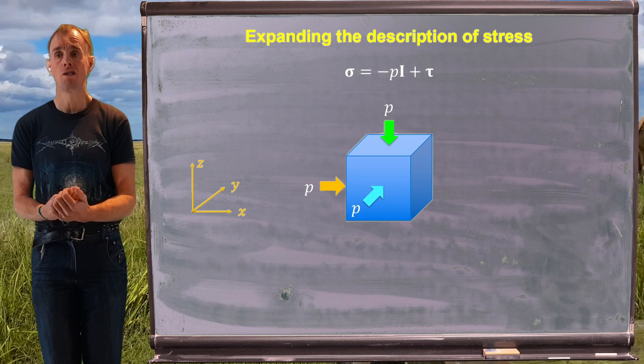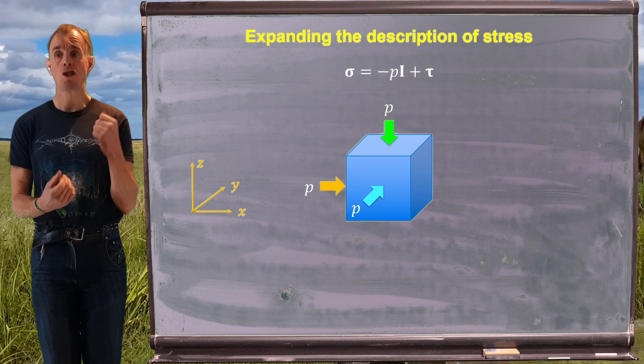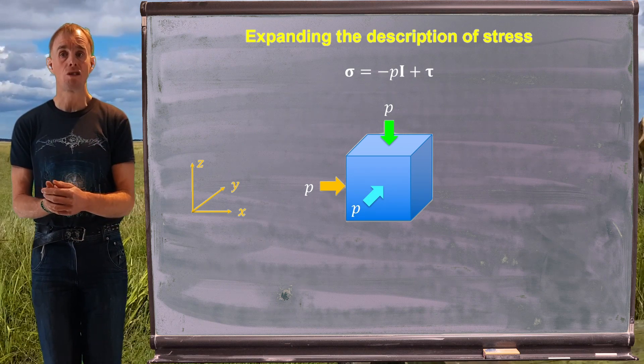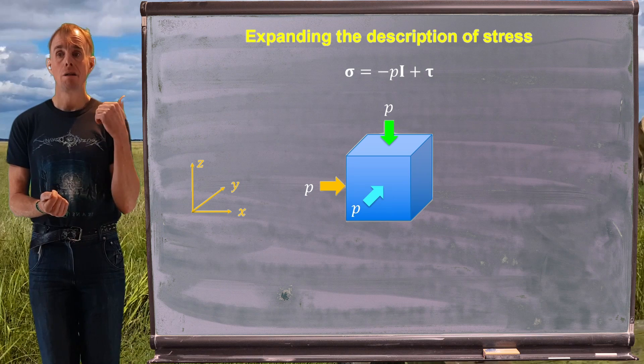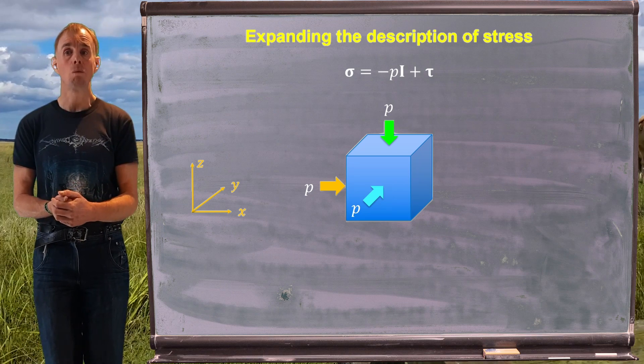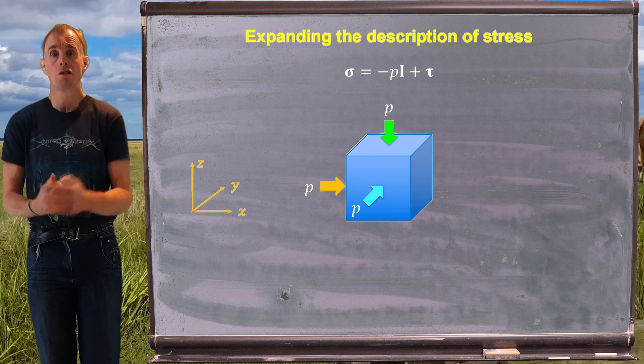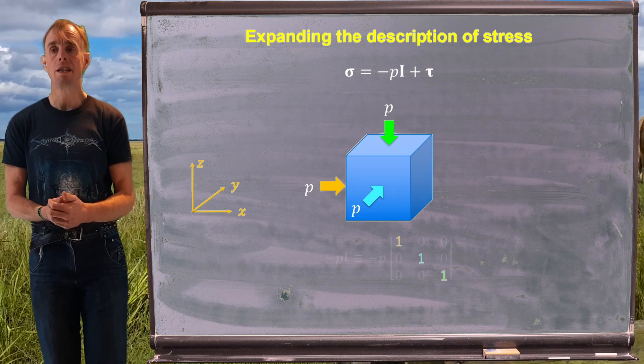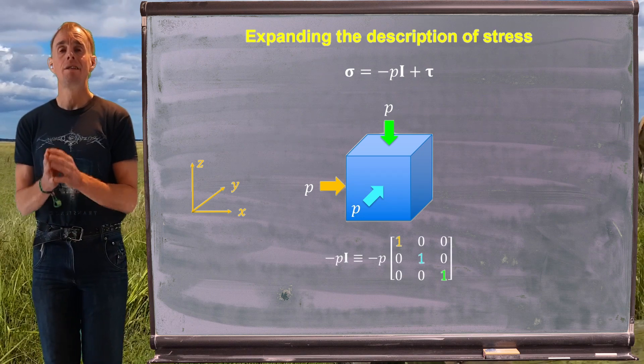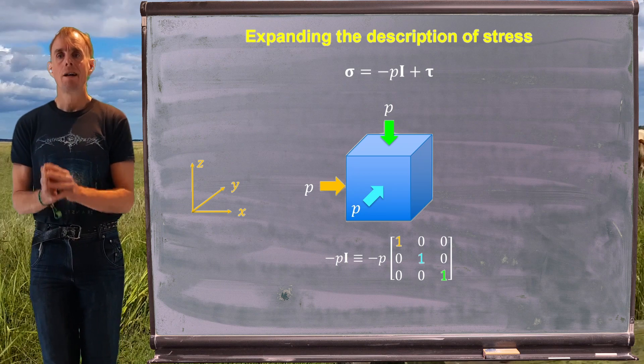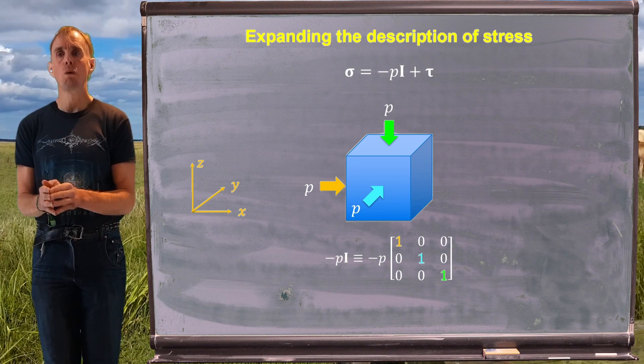And all I mean by that is we just have to state on that diagram in which direction those pressures are acting and on which faces. And we can see that the orange arrow is acting in the x direction on the x face. The blue arrow is acting on the y direction on the y face. And the green arrow is acting in the z direction on the z face. So all we really need is something to give us that information. And the identity tensor, bold I, is exactly that.